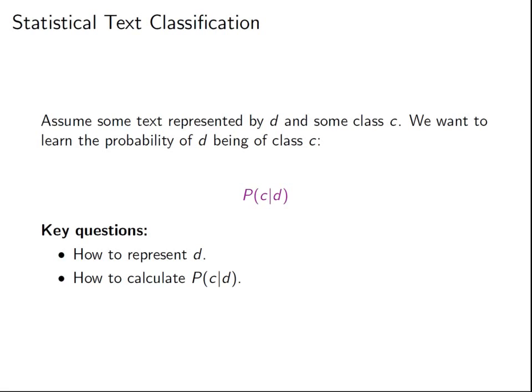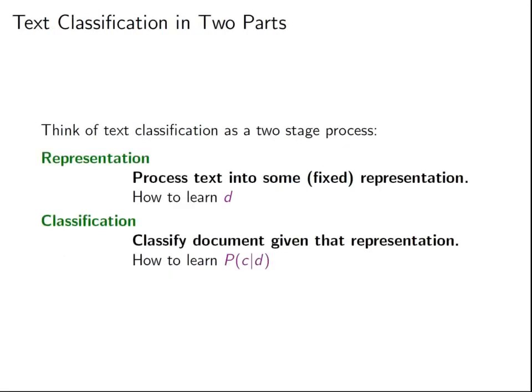More formally, assume you have text represented by a document D and some class C. What we want to learn is the probability of that document D being in class C. The two key questions are: how do we represent D, and given that representation, how do we calculate this probability of C given D? You can think of classification as a two-part process: first, representation learning — learning some representation of D given a text document; and second, the classification part — learning P of C given D.